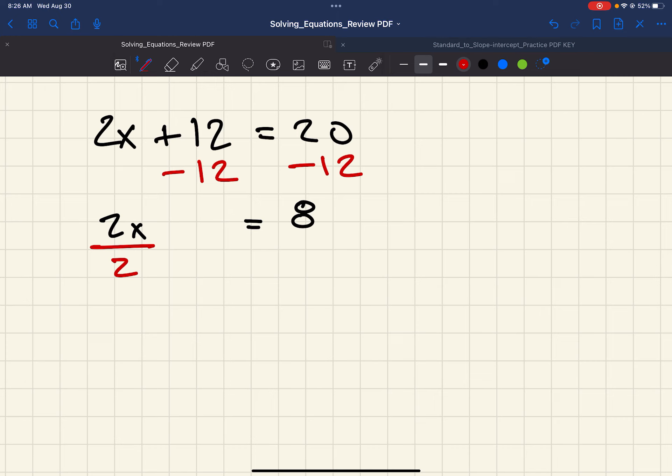And then, to get rid of the 2, if we divide by 2 on both sides, well, 2 divided by 2, that's just 1. So, we end up with 1x. And 8 divided by 2 is 4. And 1x, well, that's the same thing as just x. So, we got x equals 4. That's pretty good.